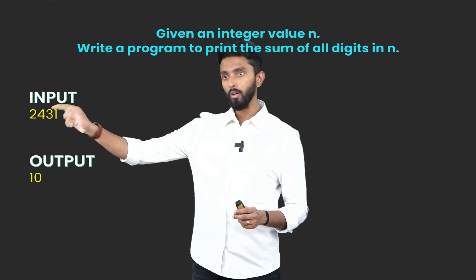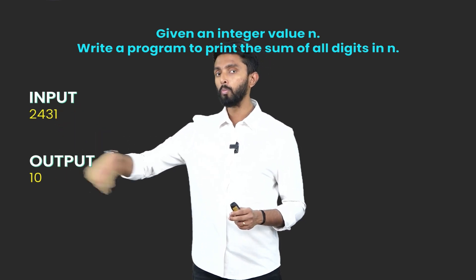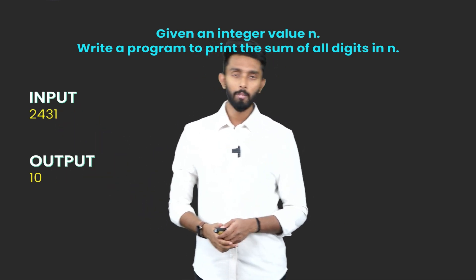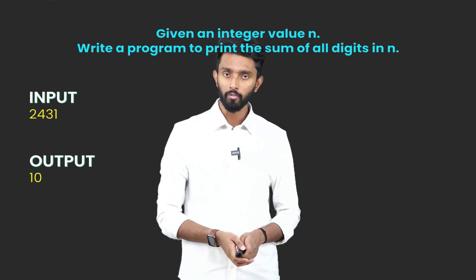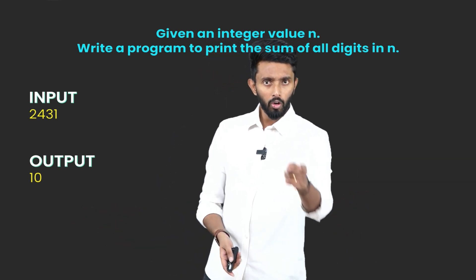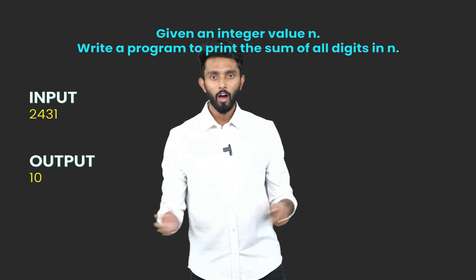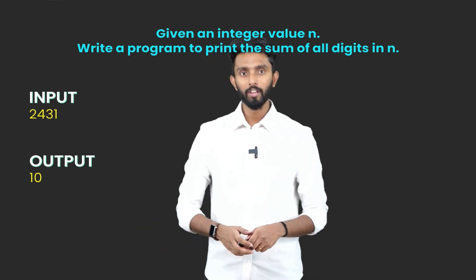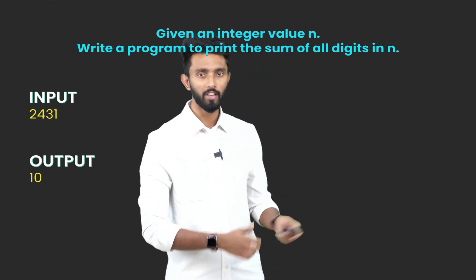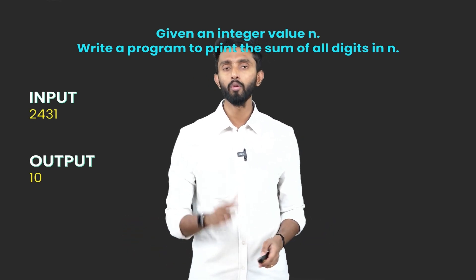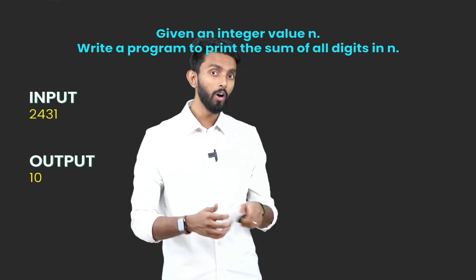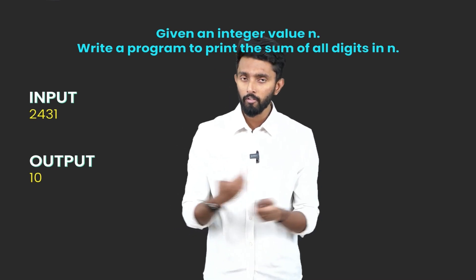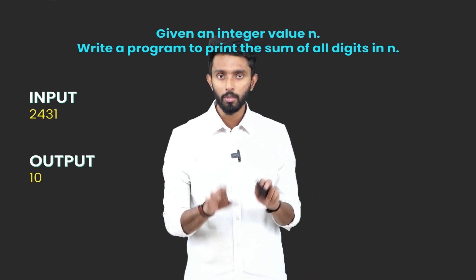So this is your n value, and this should be the output which you are going to print. Now, how do we do this is what we have to look at, but before that I want all of you to try it once. I hope all of you gave it a shot. Some of you probably have done this — quite an easy program. If you know the trick, you can do it easily. Now those of you who are new to programming and have never built your logic by writing code, try to understand how this works.